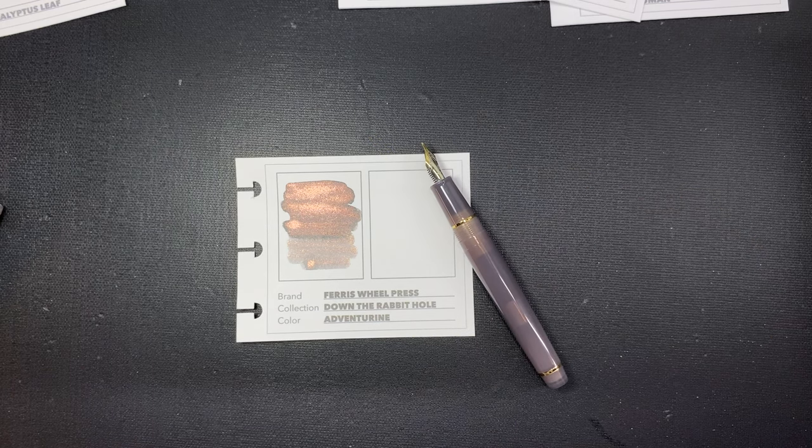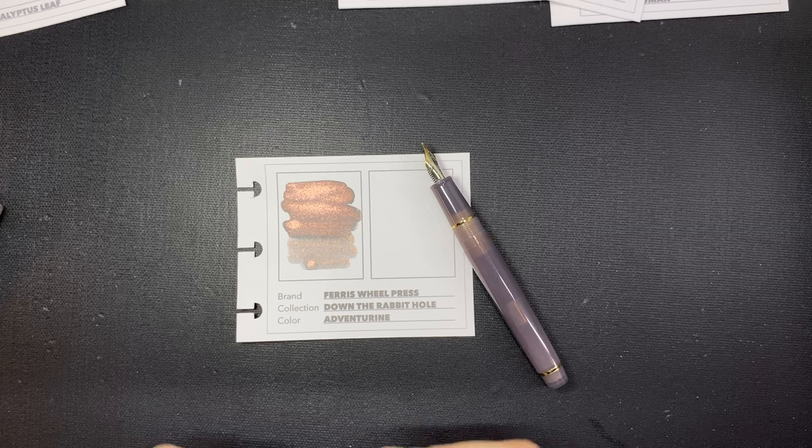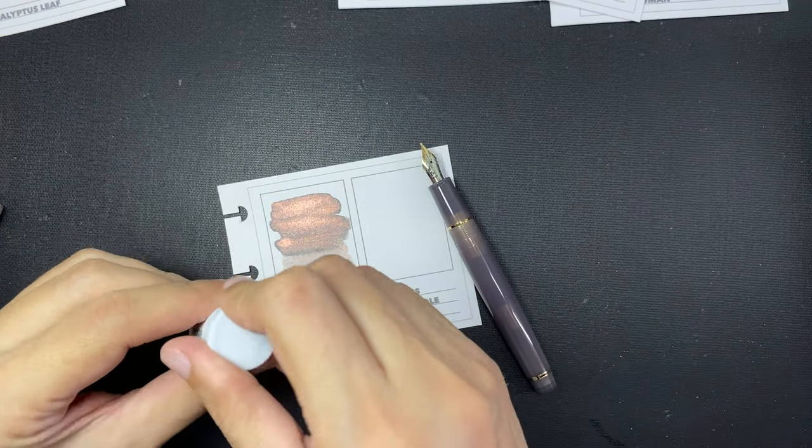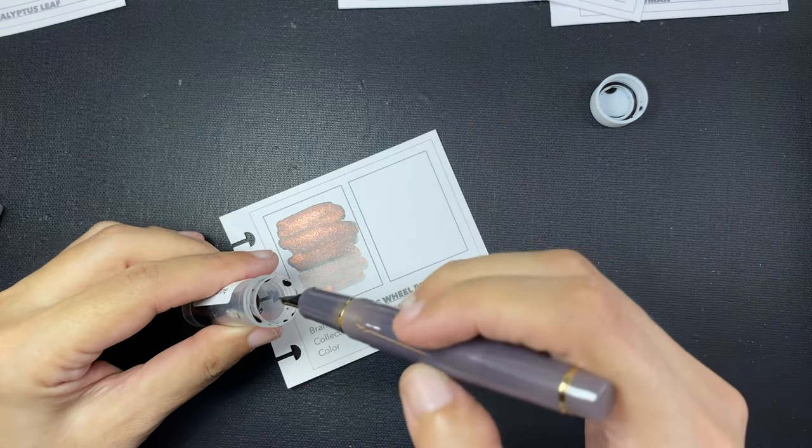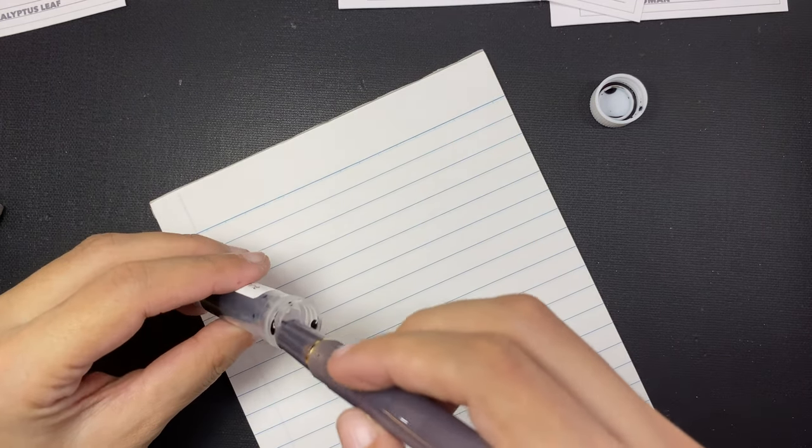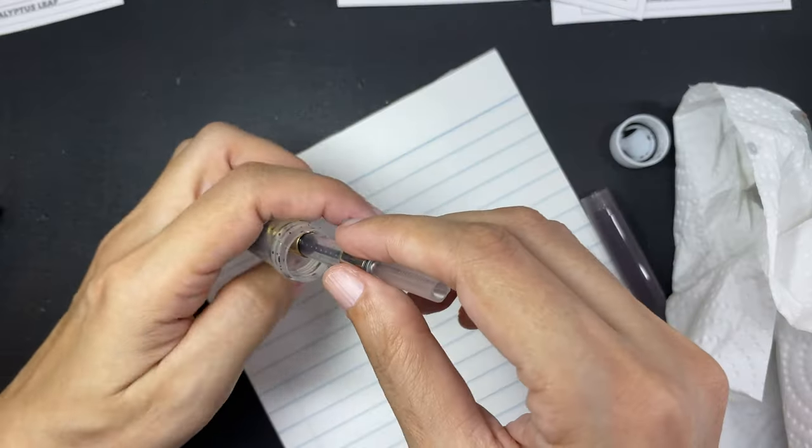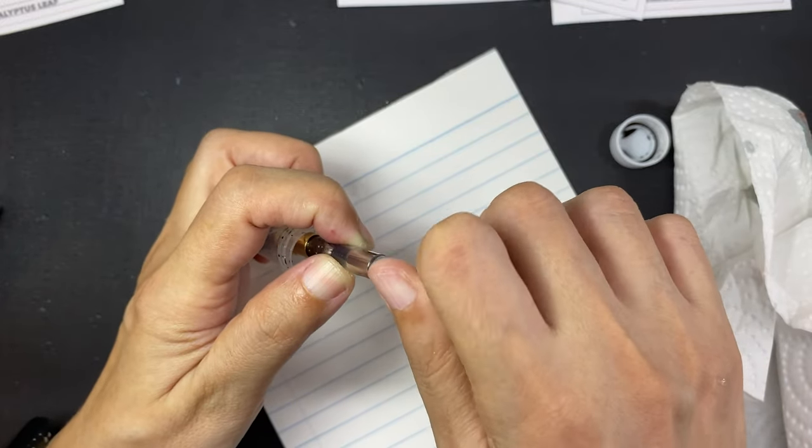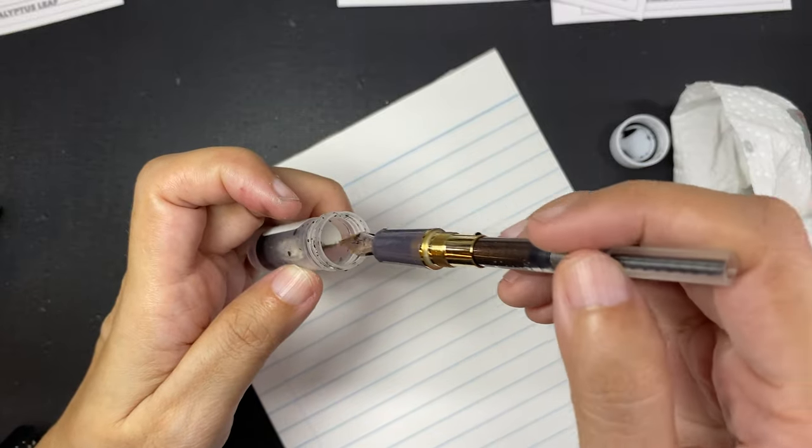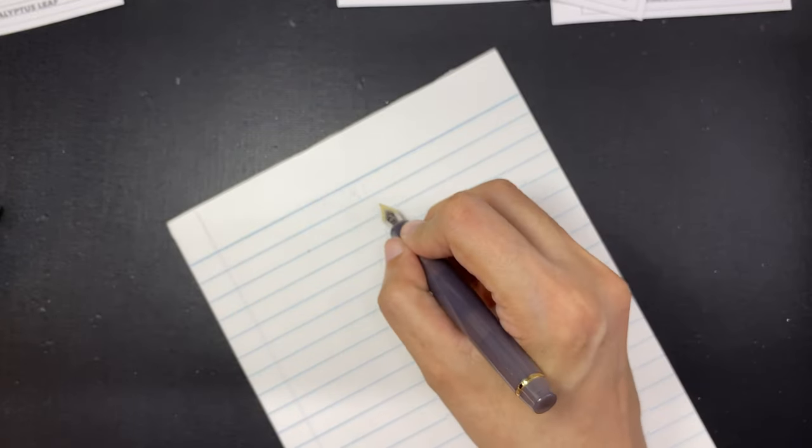Now I did want to ink one pen in this video. I unboxed this Jinhao 82 in the translucent color called gray, or volcanic ash, depending on which seller lists it. The names of these pens can be so random sometimes. And I think the Adventurine is a good color match to the pen. And I have already tested out this pen when I unboxed it. And the nib is working fine. It has a fine nib, and the nib is working fine.